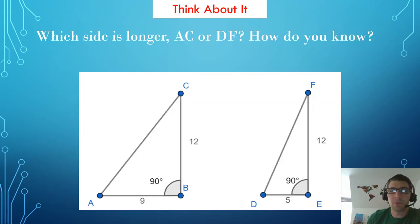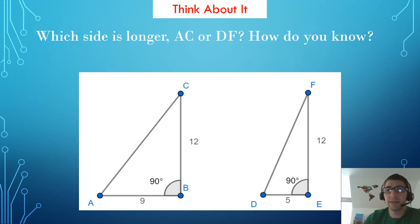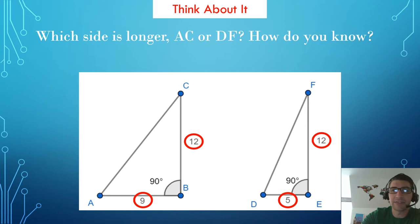Let's think about it. Which side is longer, AC or DF? How do you know? If you said AC, you are correct. Both triangles have a leg of 12. But triangle ABC's other leg has a length of 9, and triangle DEF's other leg has a length of 5. Because the Pythagorean theorem multiplies and adds these positive numbers, the hypotenuse of ABC must be longer.